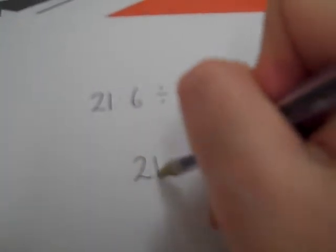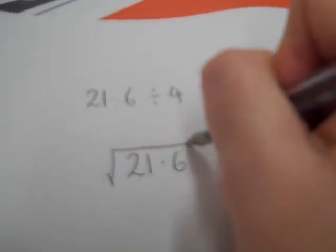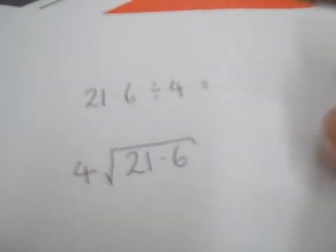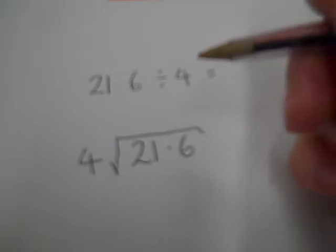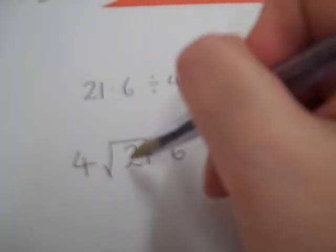We've got 21.6 and we're going to divide it by 4. This is the old-fashioned way of doing it, but in my opinion the quickest. So you say, how many 4s are there in 2?